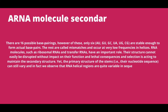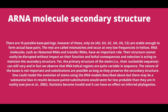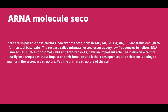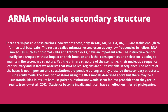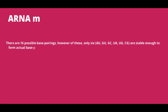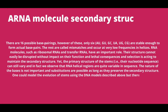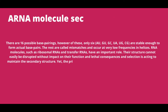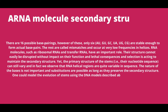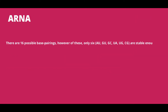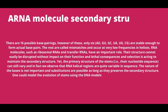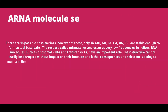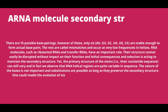RNA molecule secondary structure: there are 16 possible base pairings; however, of these, only 6 — A-U, G-U, G-C, U-A, U-G, and C-G — are stable enough to form actual base pairs. The rest are called mismatches and occur at very low frequencies in helices.